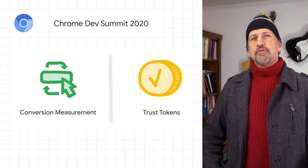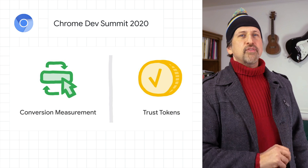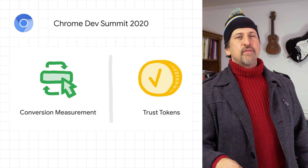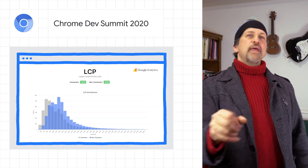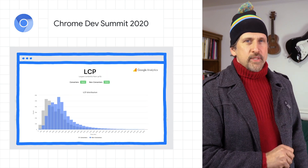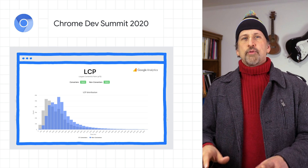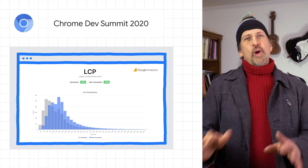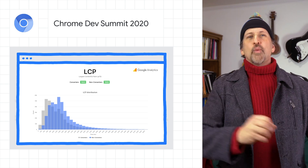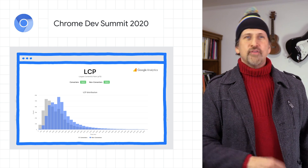We're adding powerful tools for building advanced apps, such as making progressive web apps more discoverable with Google Play Store listings, and making some key performance optimizations, while bringing you the Web Vitals Report — an open source tool that lets you query and visualize your Web Vitals metrics data in Google Analytics.